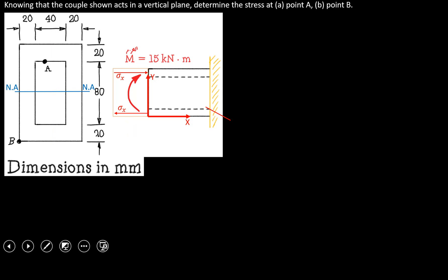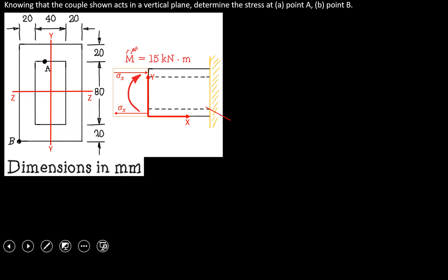Here we will have our y-axis right here. Out of or into the page is the x-axis, which is the length of the beam. This will be your z-axis — this is the axis of rotation right here.